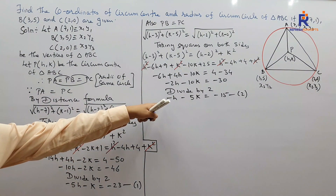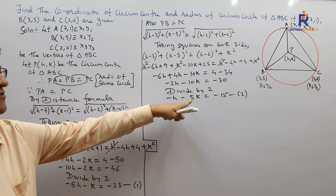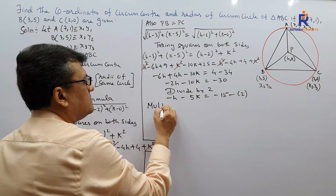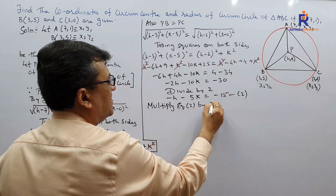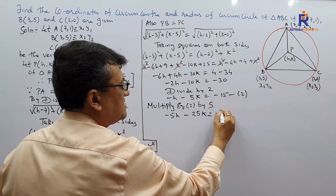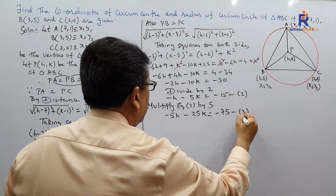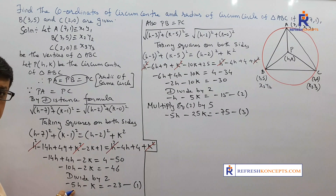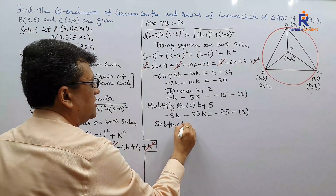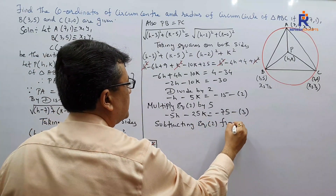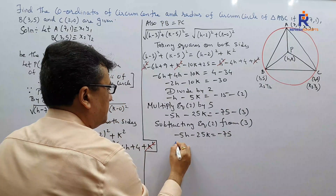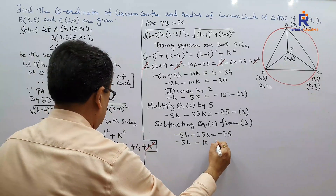From Equations 1 and 2, we see that if we multiply Equation 2 by 5, the coefficient of h becomes −5h, matching Equation 1. Multiplying Equation 2 by 5 gives: −5h − 25k = −75. Call this Equation 3. Now subtract Equation 1 from Equation 3. The h terms cancel since both have −5h with the same sign.